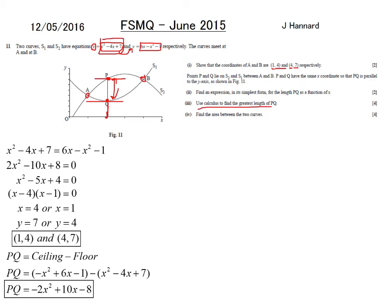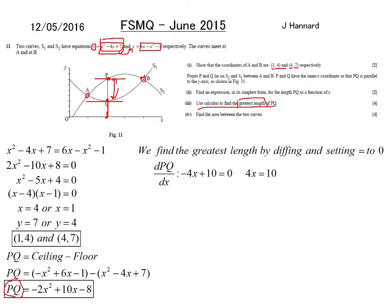Use calculus to find the greatest length of PQ. Well, to find the greatest length, obviously, you're going to have to differentiate it. So, we've now got an expression for PQ. So, we're going to do DPQ by DX. And you get that power to the front, knock one off the power. We need to set that equal to 0 to work out a greatest length, a maximum length. So, you have 4X equals 10. X must be 2.5.